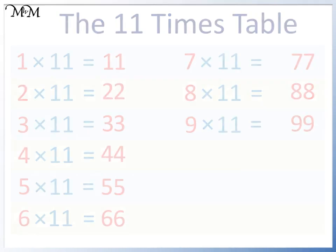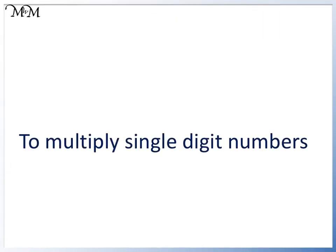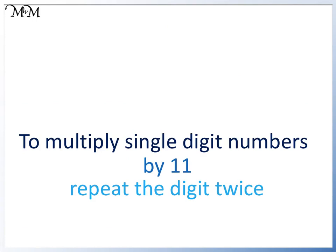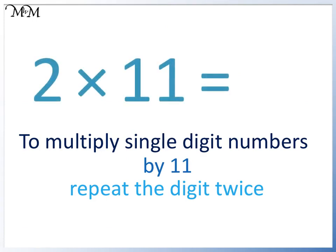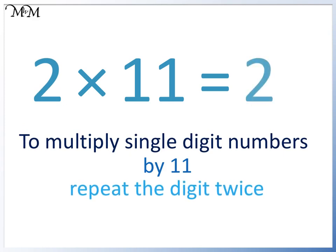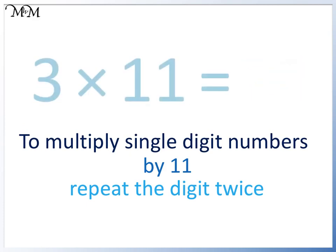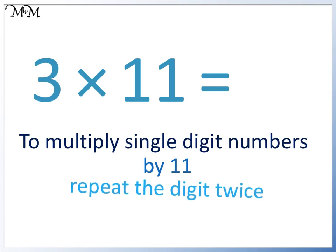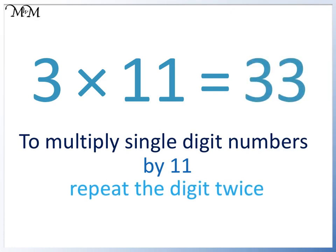To multiply single digit numbers by 11, repeat the digit twice. To multiply 2 by 11, we repeat 2 twice — 2 times 11 equals 22. To multiply 3 by 11, we repeat 3 twice — 3 times 11 equals 33.